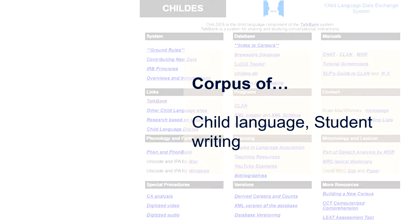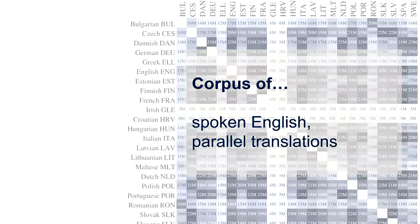But there are even more specialized corpora. For example, corpora of child language, or a corpus of student writing. There are, of course, also corpora of spoken languages, such as English, and parallel translations between languages, where we can compare how different words and phrases and expressions are translated.